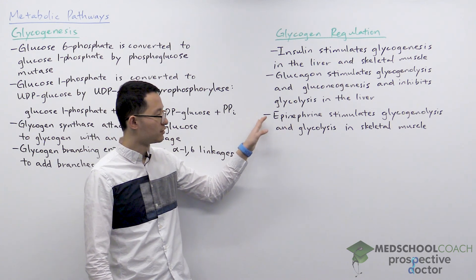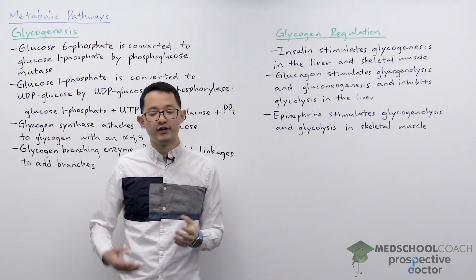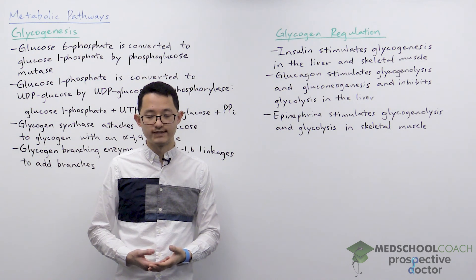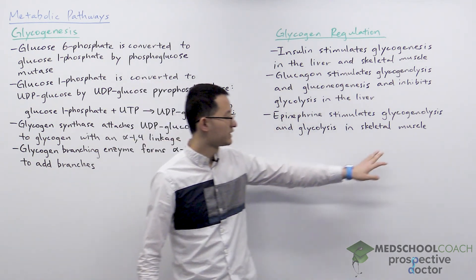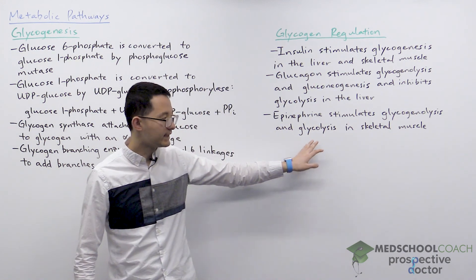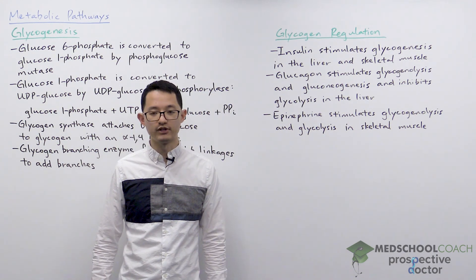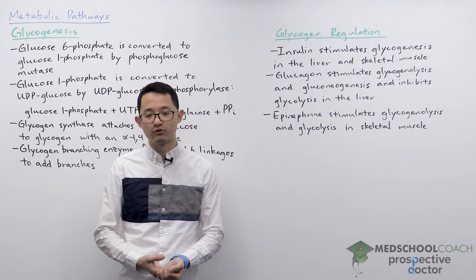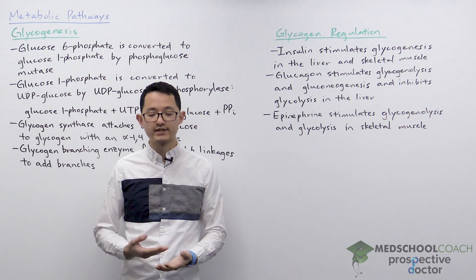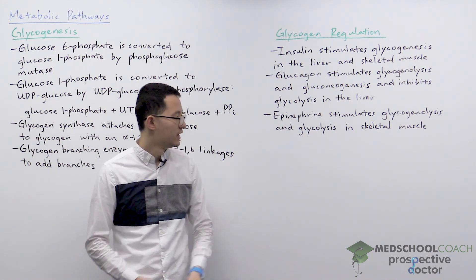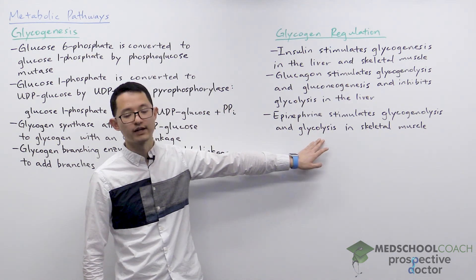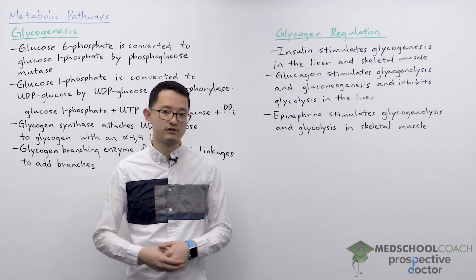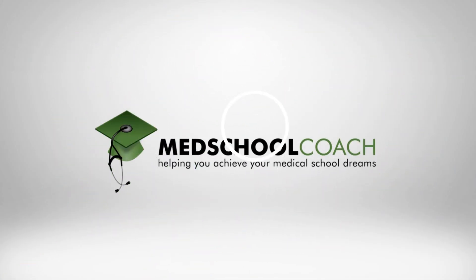Skeletal muscle cells will respond to epinephrine — you'll recall epinephrine from the fight or flight response with the nervous system. Epinephrine will stimulate glycogenolysis and glycolysis in skeletal muscle. This is because the glycogen stored in skeletal muscle is for the skeletal muscle cells to use. So when the glycogen is broken down, glycolysis is also used to metabolize those glucose molecules that have been produced.